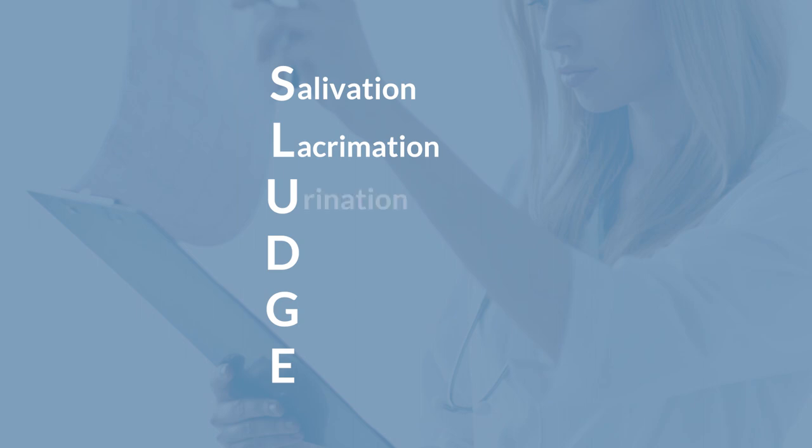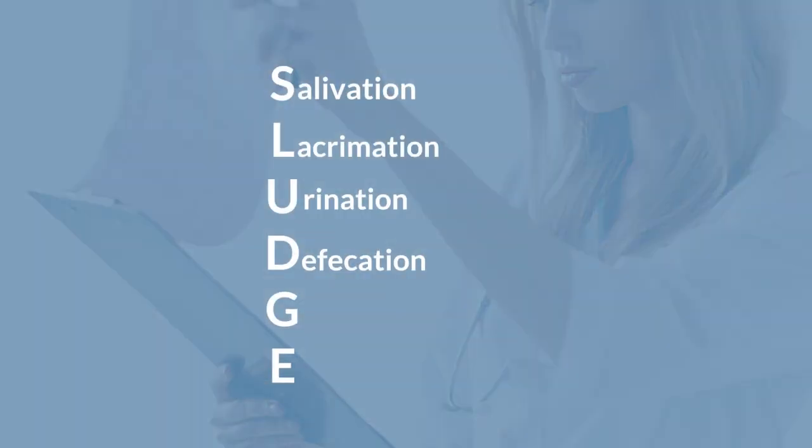U stands for urination — patients producing too much acetylcholine may not have good urinary bladder control and may leak urine or produce excessive urine. D stands for defecation, where you'll see similar symptoms. G stands for gastric upset — patients going through a cholinergic crisis may experience gastric upset.